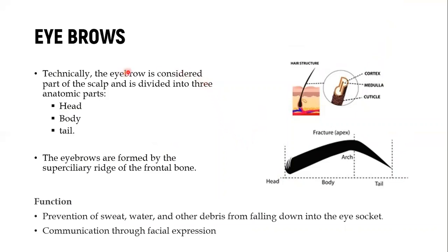We also have the eyebrows, which are technically considered part of the scalp. The eyebrow has three parts: the head, which is medially located, the body, and the tail. The eyebrows are formed at the superficial ridge of the frontal bone — if you palpate around the eyebrows, you will feel the frontal bone. Their function is to prevent sweat, water, and debris from falling down into the eye socket, and they are also used for communication through facial expression.